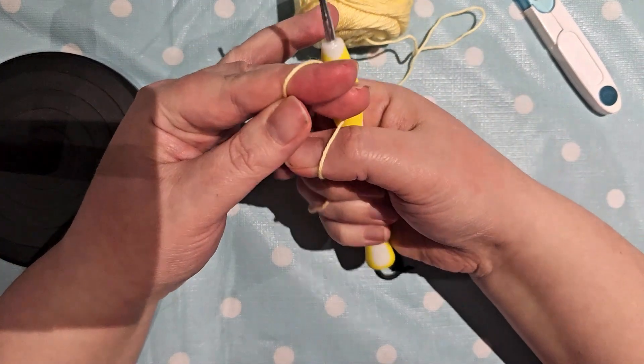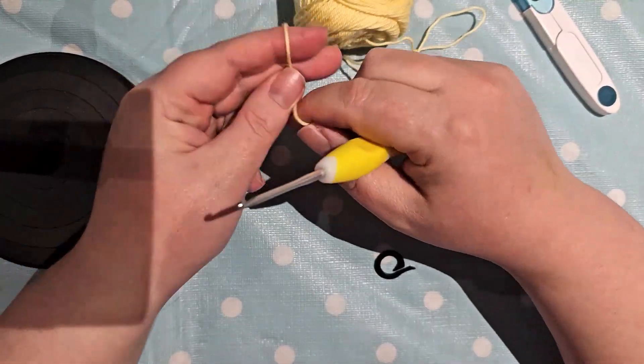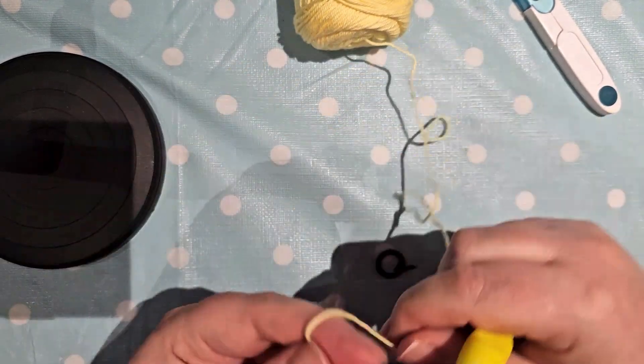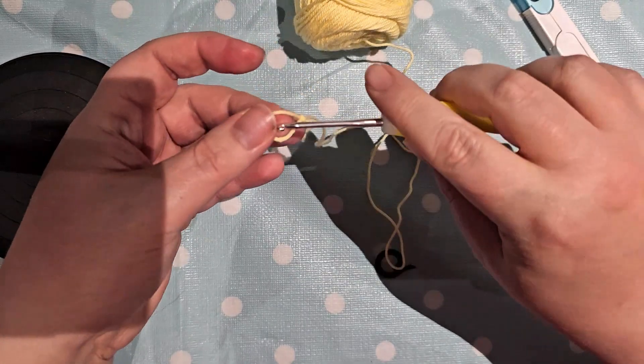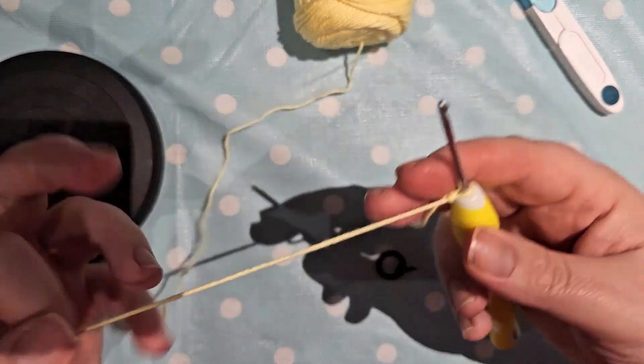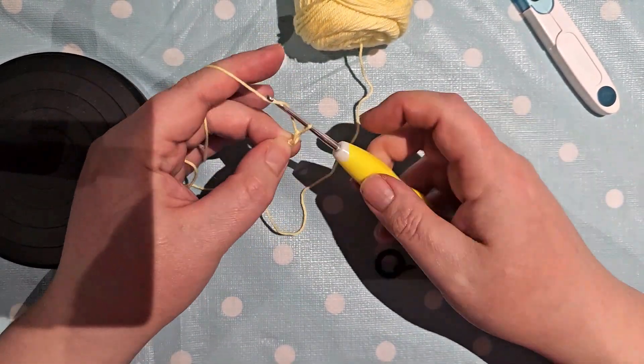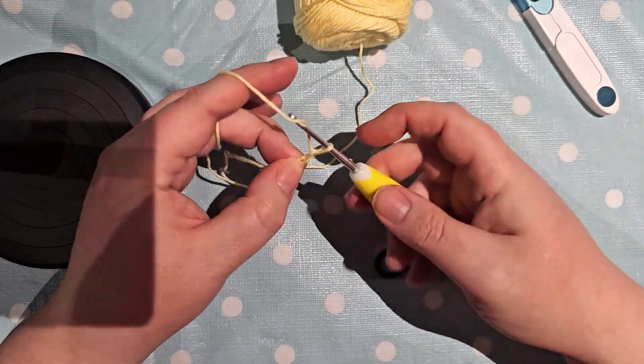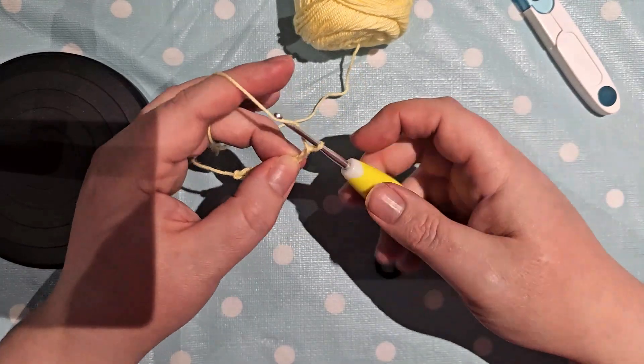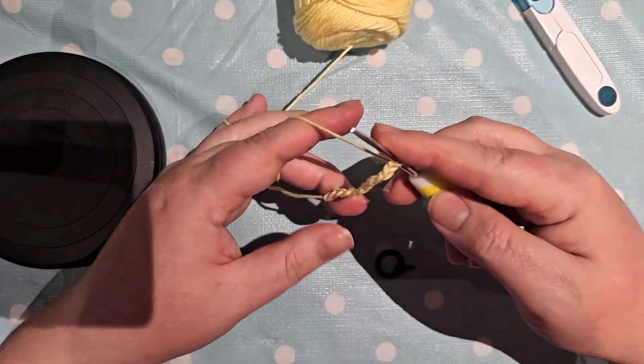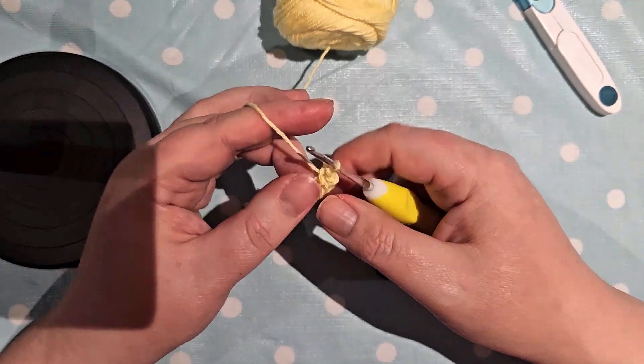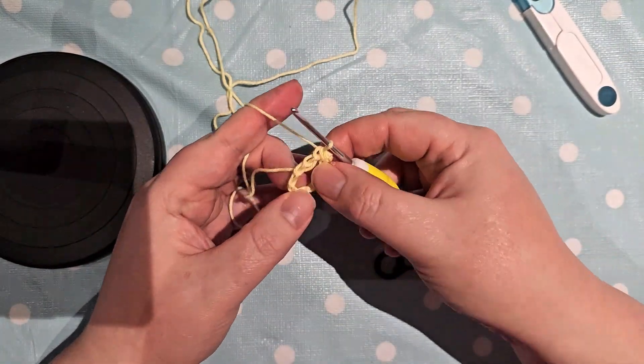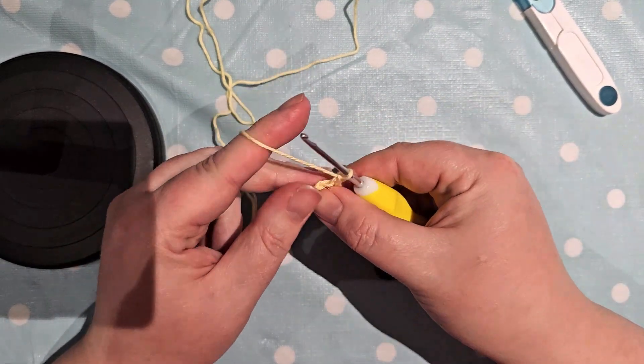Basic start off, you want to make a slip knot. So start off by chaining 10. And then you want to join that with a slip stitch to make a ring. So that's got your ring there and then chain one. Pull that nice and tight.